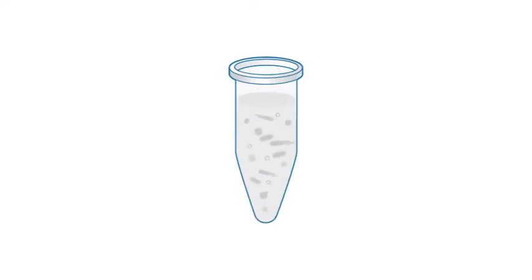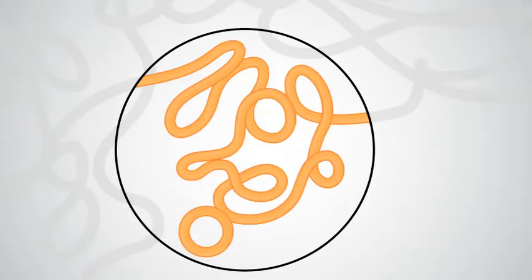Proximeta Hi-C. We begin with a mixed sample, such as a soil or fecal sample. Each cell contains DNA and proteins that are packaged into three-dimensional structures.